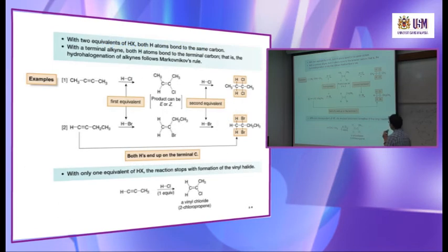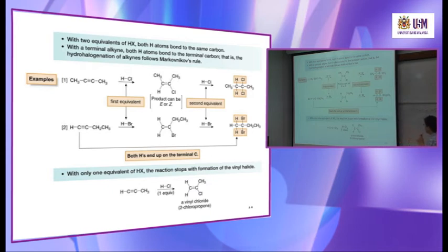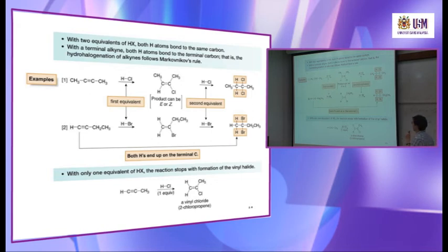With only one equivalent of HX, the reaction stops with the formation of a vinyl halide — the H is also added following Markovnikov's rules. For the internal alkyne example (which is symmetrical), H can add to either carbon since both are equivalent. The Cl is added to the other carbon, and this could be E or Z, syn or anti-addition. But the final product — with two equivalents — has both H atoms on one carbon and both Cl atoms on the same carbon: geminal dihalide.